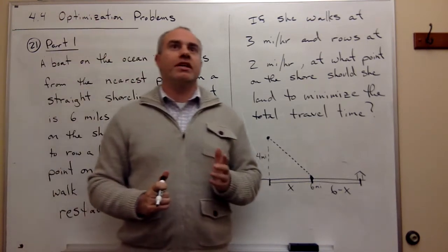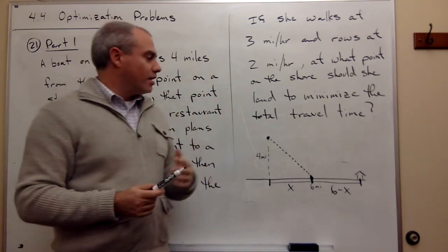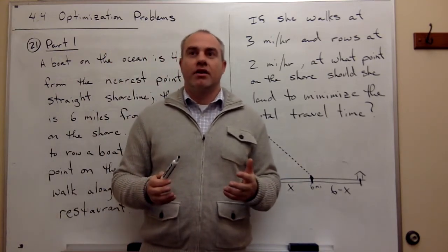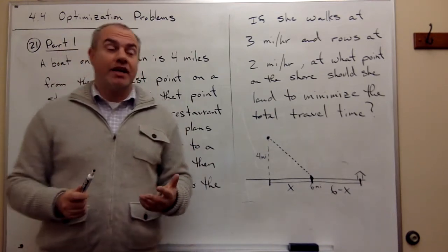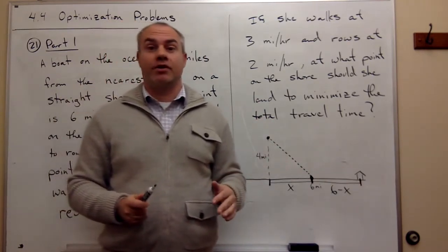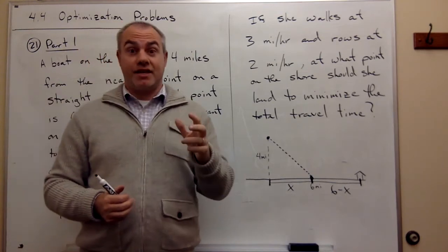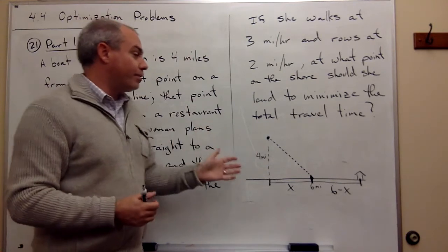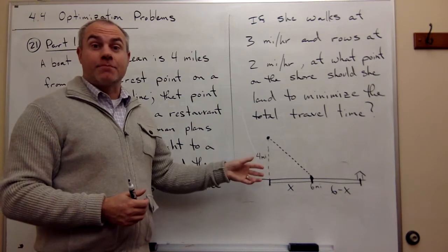Now that we have a picture set up, we need to ask: what is it that I'm trying to make big or small here? What I'm really trying to minimize is time — I want her to get to the restaurant in the shortest time possible. So we need to set up an equation that gives us time in this problem.